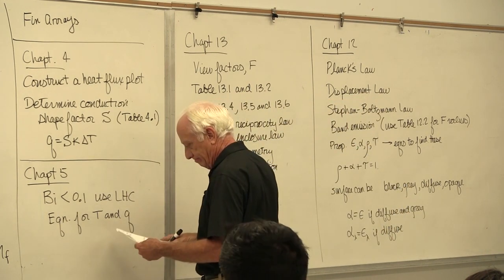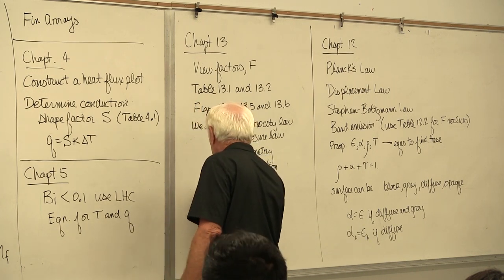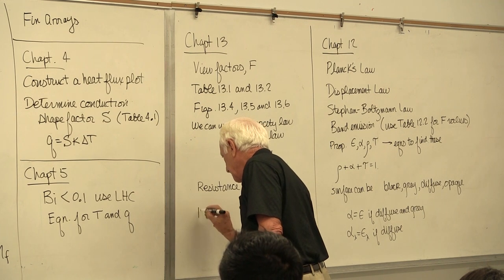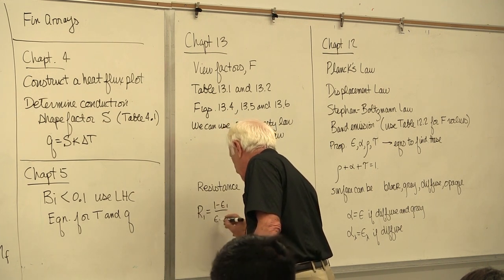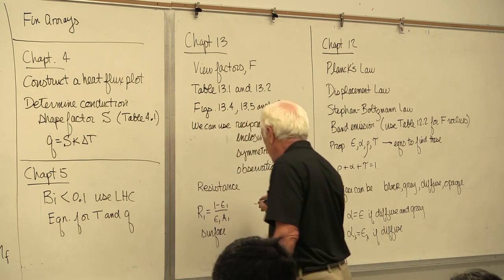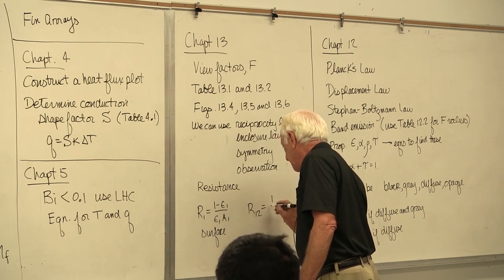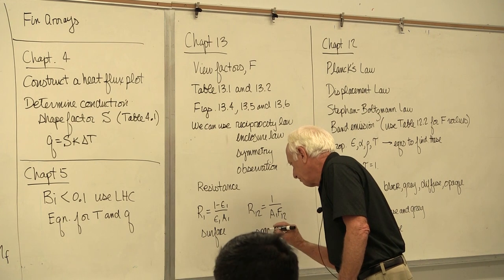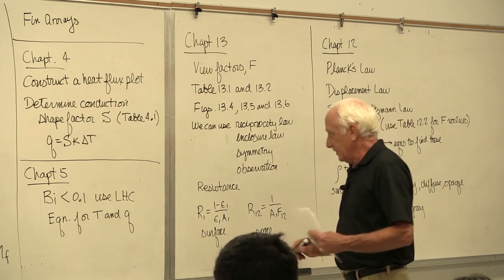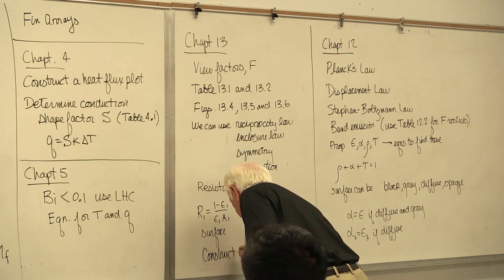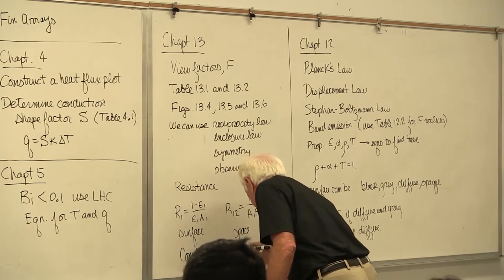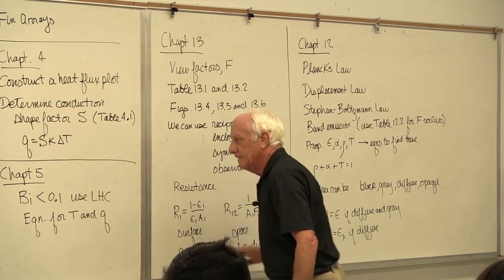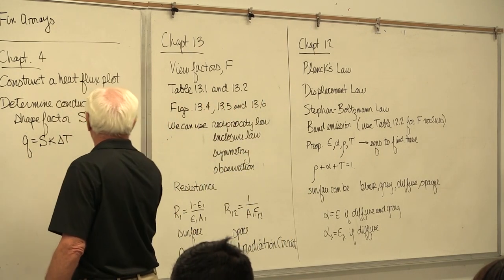Know about the resistances. Resistances start out with: every surface in an enclosure has a surface resistance. So R1 equal 1 minus epsilon 1 over epsilon 1 A1—surface resistance. A space resistance: every pair of surfaces in an enclosure has a space resistance: 1 over A1 F1,2. And again, it may be series, it may be parallel, it may be series-parallel, just like we have in conduction, but now for radiation.